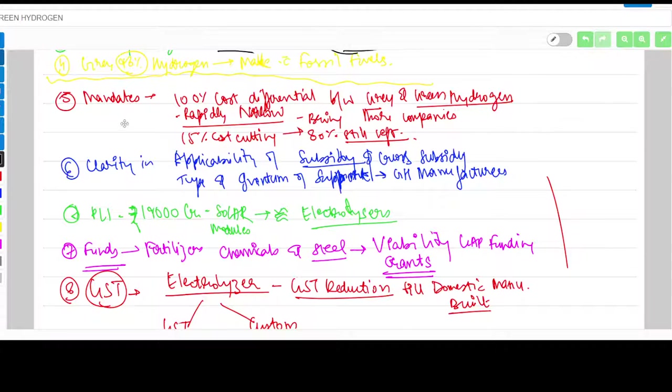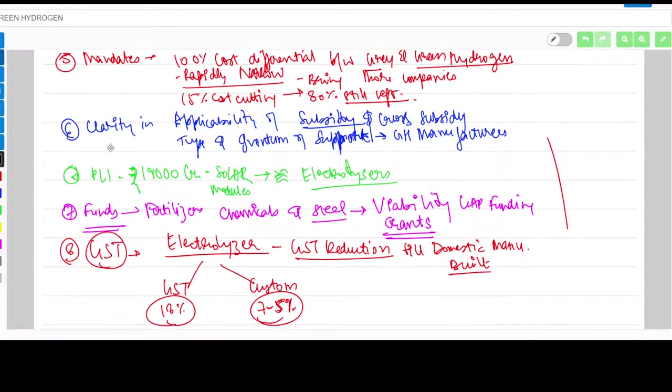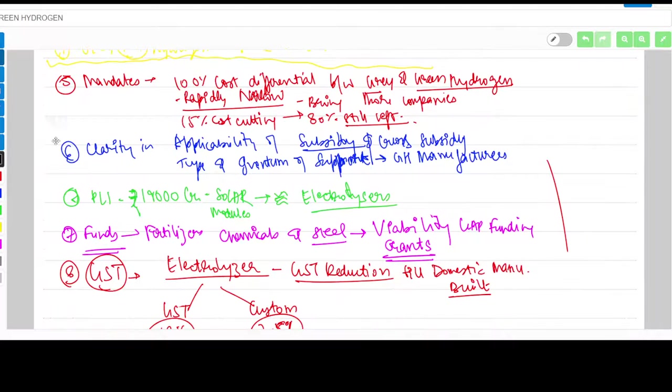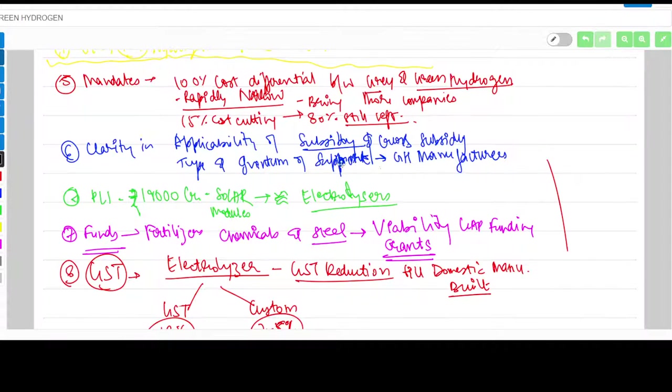Next is clarity and applicability of subsidies. He suggests clarity on applicability of subsidy and cross subsidy for green hydrogen manufacturers - who can consume it, what type and quantum of support manufacturers should get. This should be specified in a complete policy.